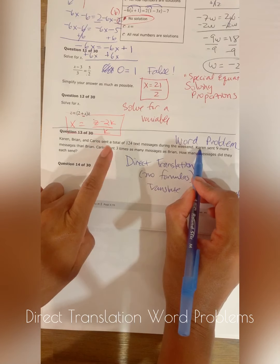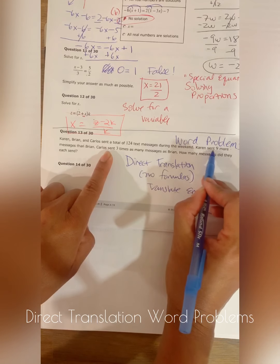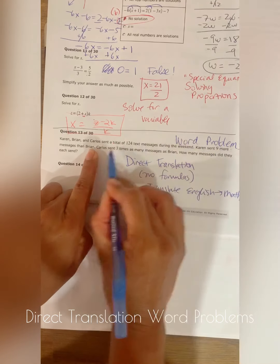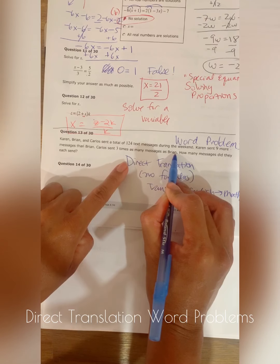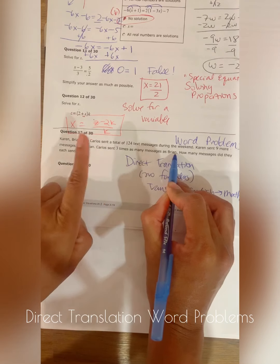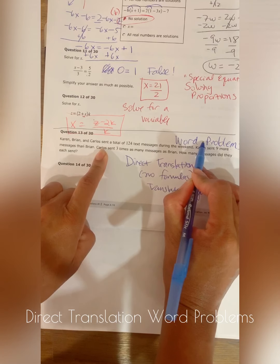...the information that's given is that Karen has a certain number in relationship to Brian and Carlos has a certain number in relationship to Brian. So if we know what Brian's text messages is, then we'll know what Karen and Carlos is. I hope that makes sense.